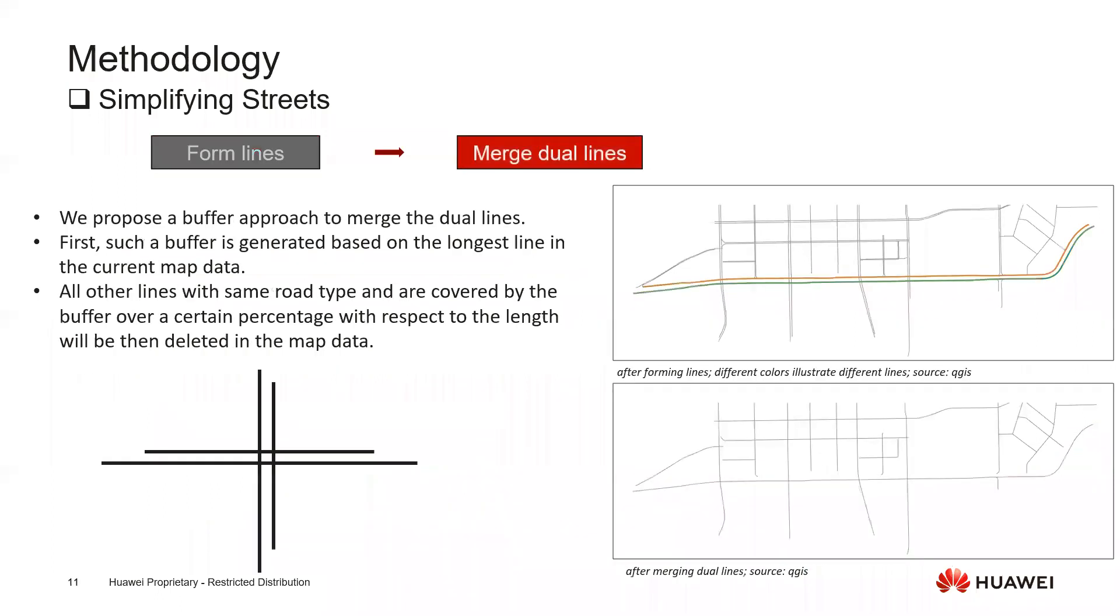Then once we have the lines, next we want to merge them together because clearly those two lines we can see they basically have the very similar shape, have the similar length, and also they are approximately parallel. If we can just use one single line as a result here, then we can reduce the complexity a lot.